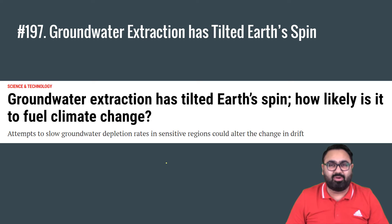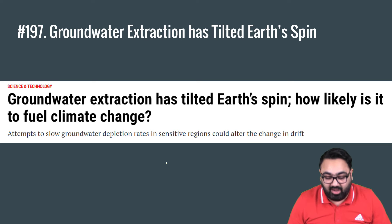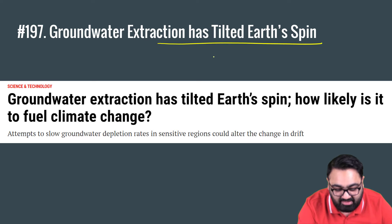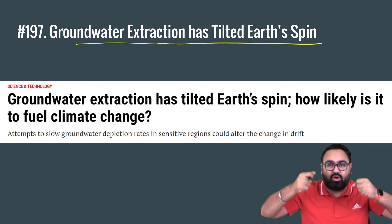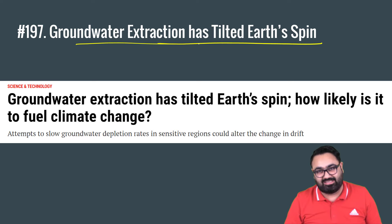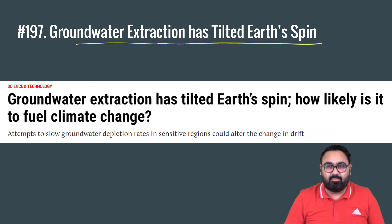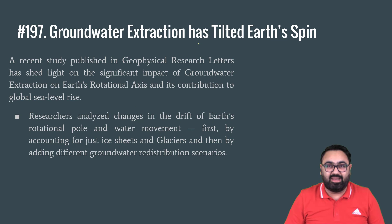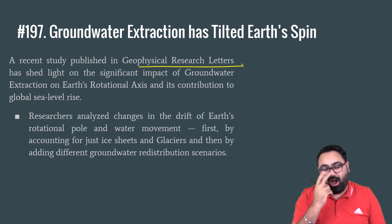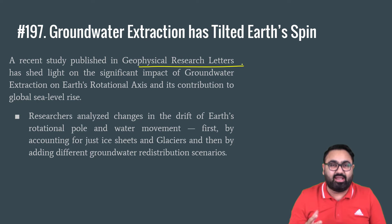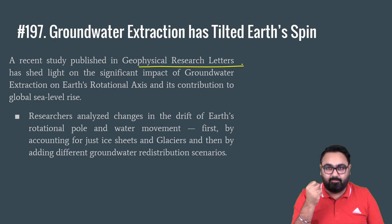A study reveals that the Earth's spin axis has tilted even further because of excessive groundwater extraction. Humankind has extracted so much water from the ground that we have tilted the Earth's axis. This has been confirmed by a study published in Geophysical Research Letters. The simple idea is: when you take out groundwater, you are changing the mass distribution of the Earth. When a lot of water is taken out from one place and not from another, it leads to a change in the orientation of the Earth, resulting in a drift in Earth's rotational pole.